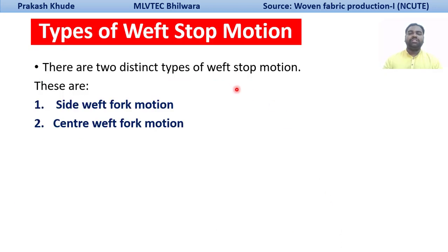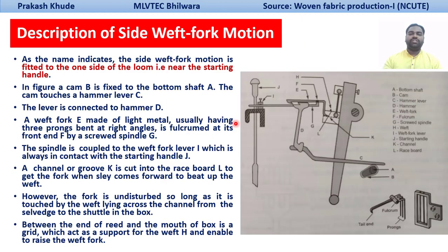There are basically two different types of weft stop motions: one is the side weft fork motion and another is the center weft fork motion. In this video we will cover the side weft fork motion, and in the next video we will talk about the center weft fork motion. As the name suggests, the side weft fork motion is mounted on only one side of the loom, that is on the starting handle side.